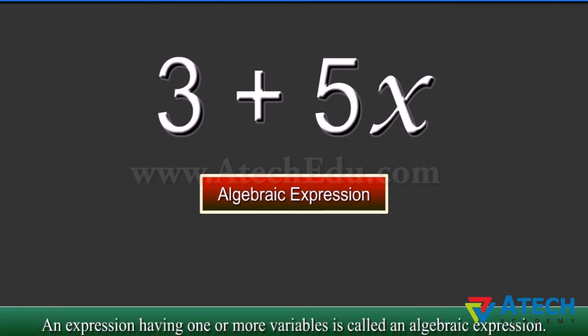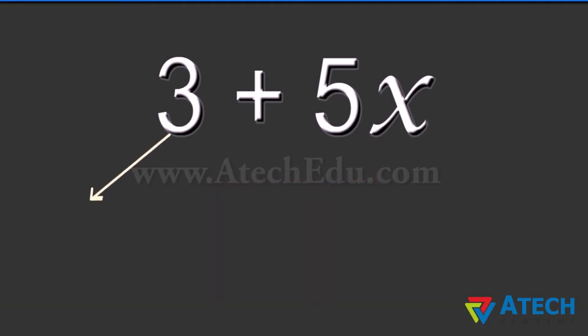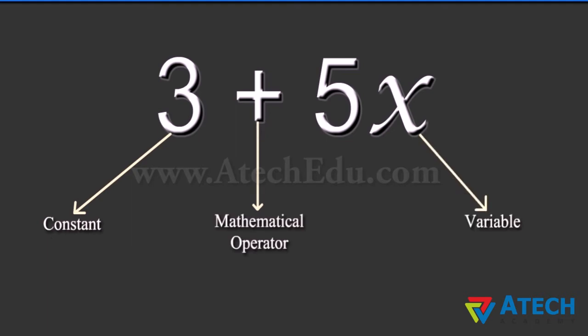An expression having one or more variables is called an algebraic expression. Expressions are formed from variables and constants. The expression 3 plus 5x is formed from the variable x and constants 3 and 5. Plus is a mathematical operator.